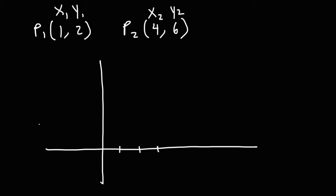Now, let's plot the points. So P1 is at 1, 2. So the x value is 1, the y value is 2. So that's our first point.